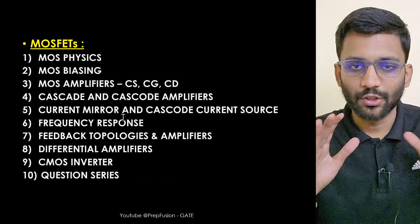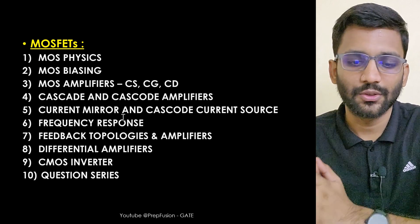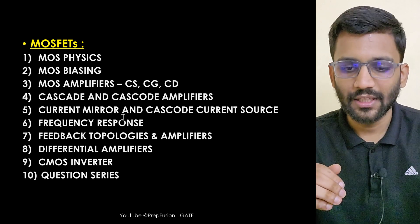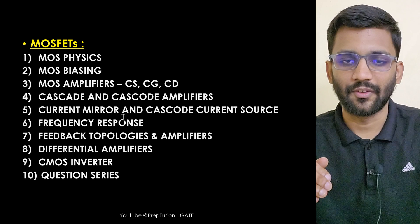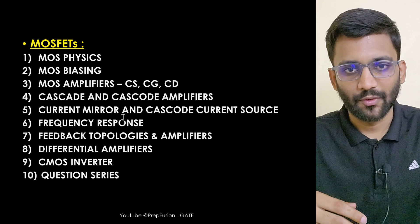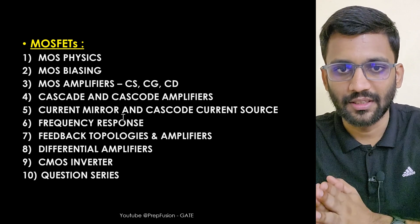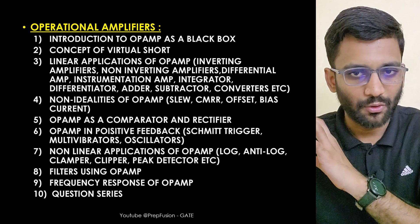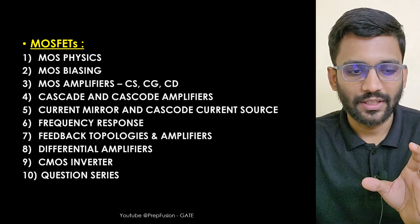Then we move to MOSFET, one of the most important topics for GATE aspirants. We will cover MOSFET physics, biasing, all kinds of amplifiers — common source, common gate, common drain — cascode amplifiers, current mirror, amplifiers using current mirror, frequency response, feedback circuits, and then we will build up to the op-amp. Differential amplifiers and CMOS inverter are also included. MOSFET will be covered in nearly 45 hours and diode circuits in 18 hours.